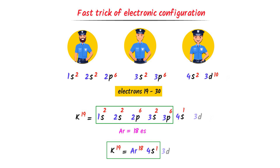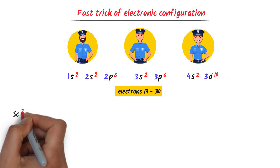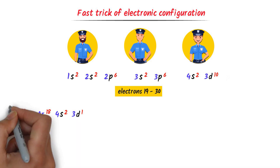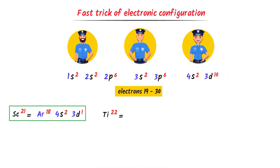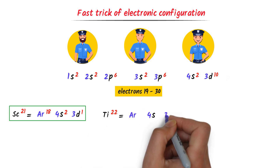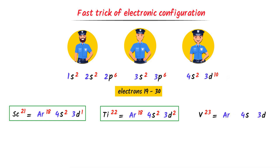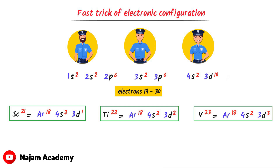For d-block elements with electrons greater than 18, I use the shorthand 'argon' for the 18 core electrons. Scandium has 21 electrons: argon (18) + 2 in 4s + 1 in 3d. Titanium has 22 electrons: argon (18) + 2 in 4s + 2 in 3d. Vanadium has 23 electrons: argon (18) + 2 in 4s + 3 in 3d.